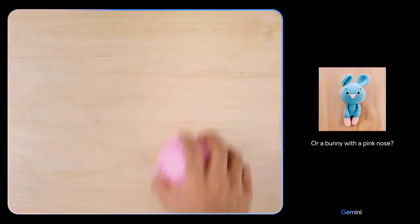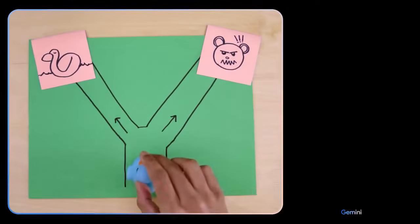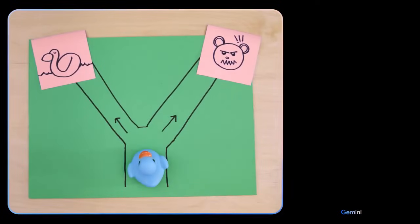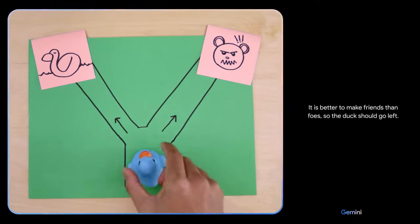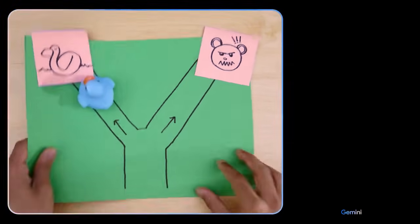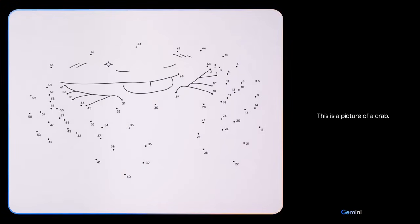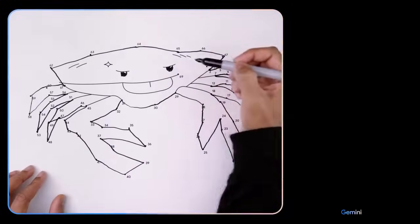Oh, I'll keep those in mind. Which way should the duck go? Going left leads to a duck, which is a friend. Going right leads to a bear, which is a foe. It is better to make friends than foes, so the duck should go left. Smart choice. This is a picture of a crab. That's right.